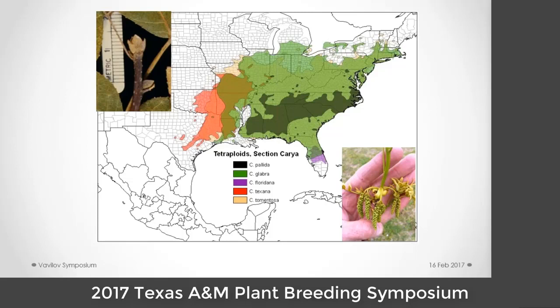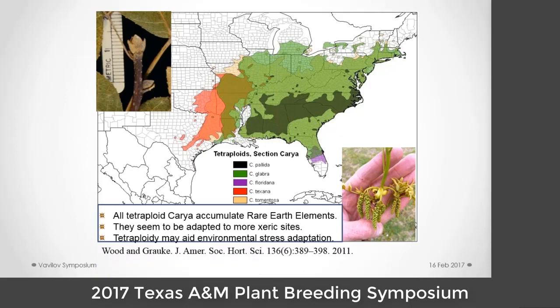Like the diploids, the tetraploids have imbricate bud scales and form their catkins in the axils of those bud scales. All tetraploid members of Carya accumulate rare earth elements and seem to be more adapted to xeric sites. Recently, Bruce Wood published additional work indicating that adding rare earth elements to pollen germination media has agonist and antagonist effects, impacting germinability, and those rare earth elements may impact levels of reproductive isolation.